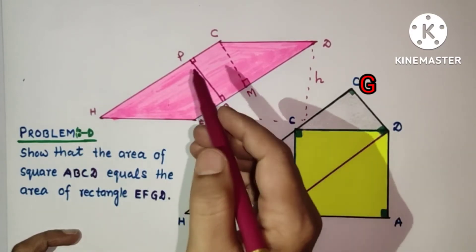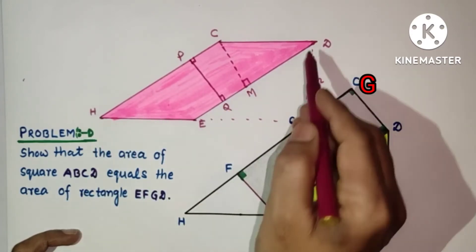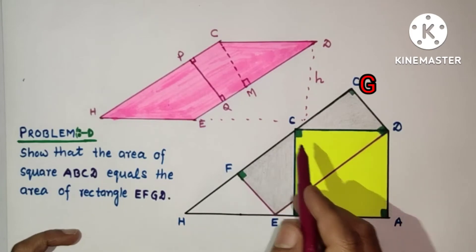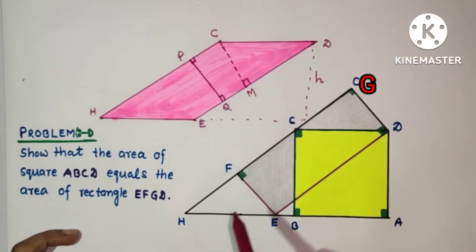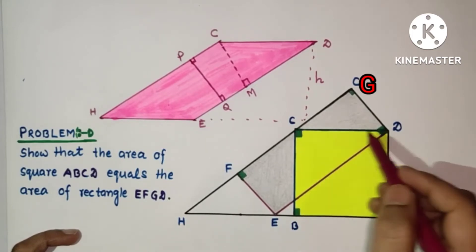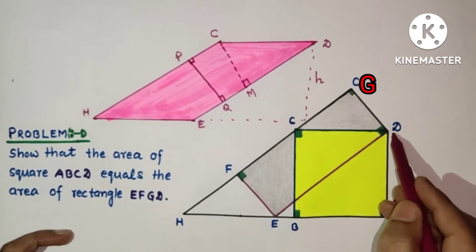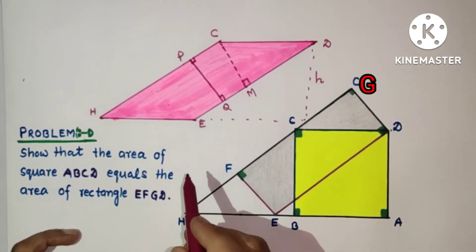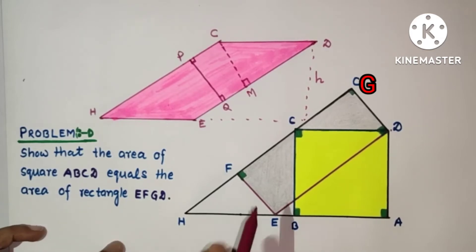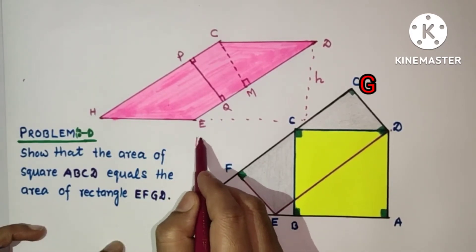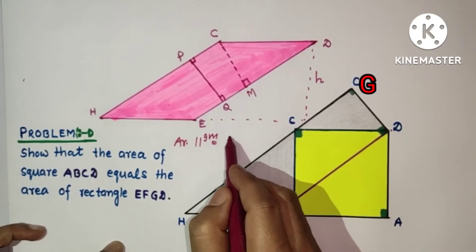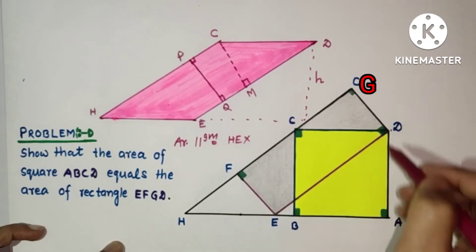On the other hand, we can also express the area of the parallelogram using HE as the base. For parallelogram HEDC, if we take HE as the base, the height is found by dropping a perpendicular from D to HE extended. So the area of the parallelogram equals HE times DA, or equivalently HE times CB.